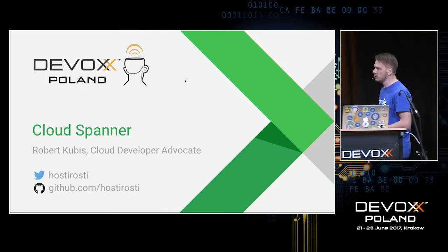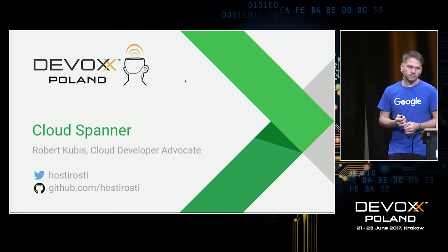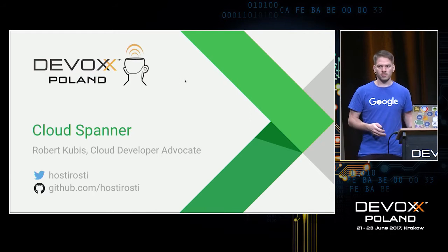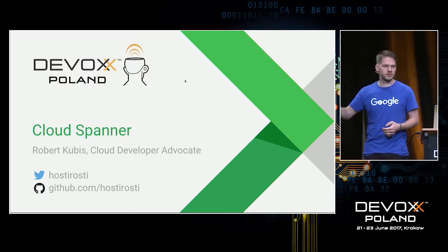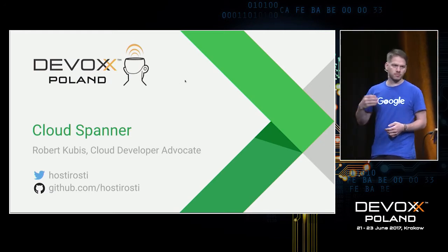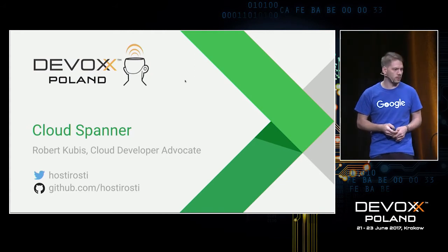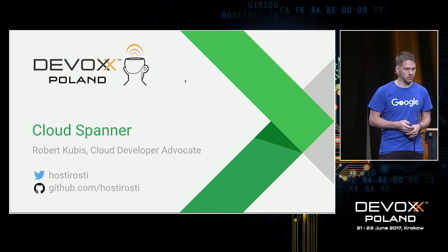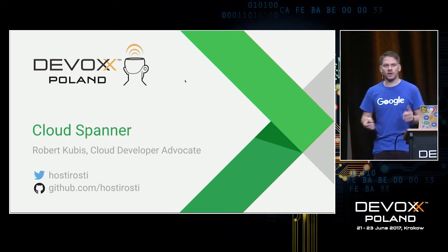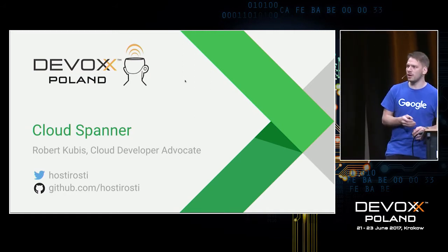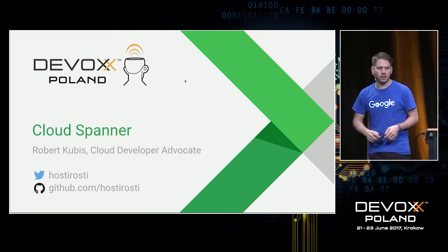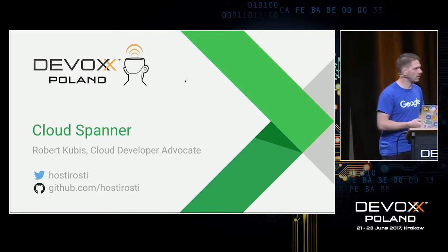I'm Robert Kubis, a developer advocate for the Google Cloud Platform. We understand our job as a bi-directional role between developers outside the company who build things on top of our platform, and the people inside — Google employees, SREs, and software engineers. Please reach out to me with constructive feedback, issues, or cool ideas. You can find me on Twitter or GitHub.